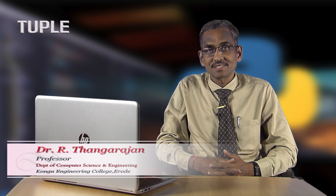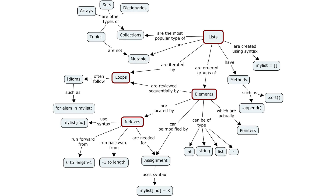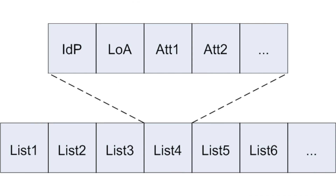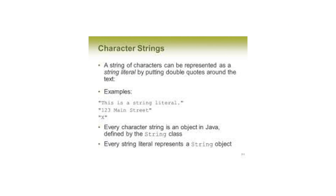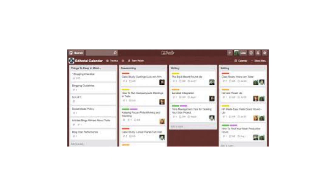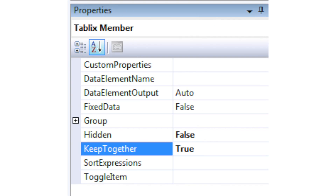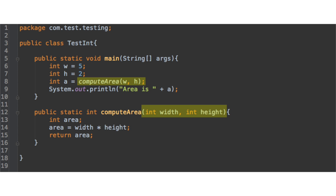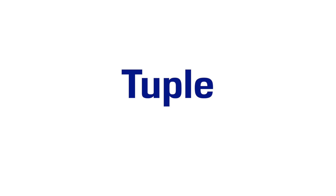Dear learners, in the previous module we have learnt about Python list. Recall that a list is a data structure in Python that is a mutable or changeable ordered sequence of elements. Each element or value inside a list is called an item. Just as strings are defined as characters between quotes, lists are defined by having values between square brackets. Lists are very handy when you want to work with many related values, enabling you to keep data together, condense your code, and perform the same methods and operations on multiple values at once.